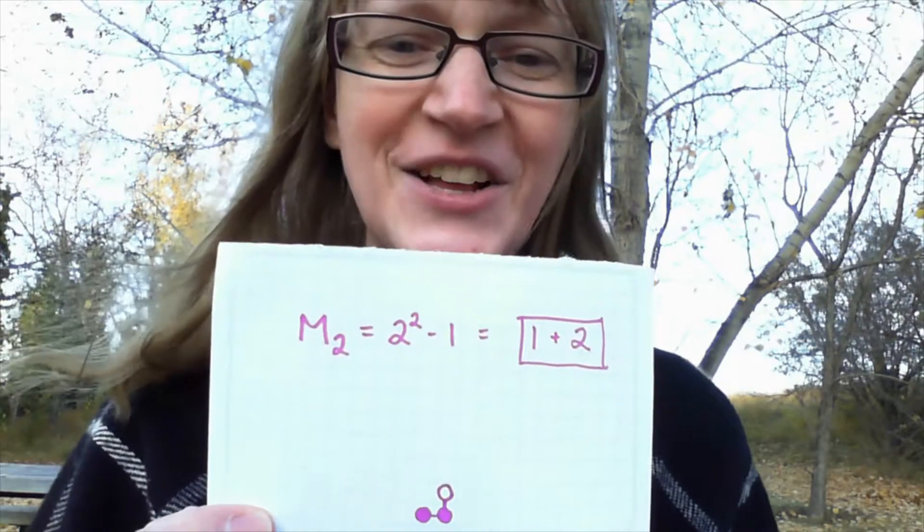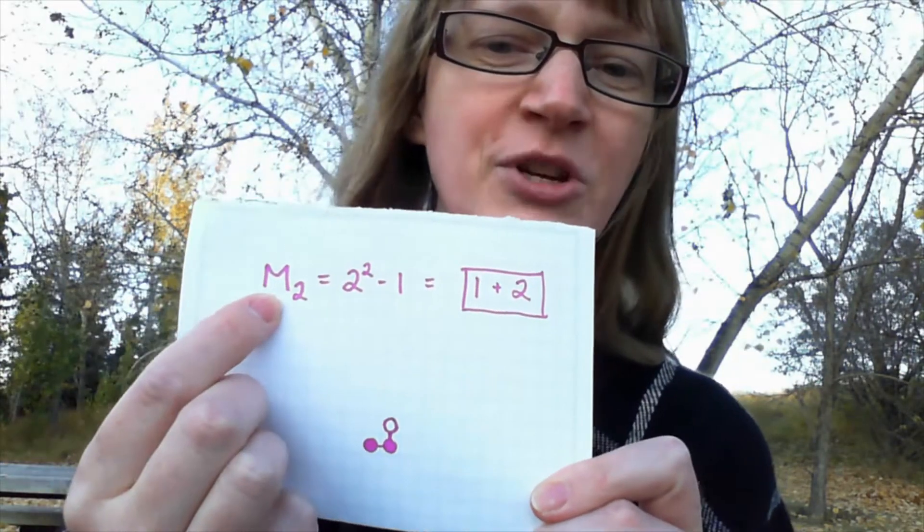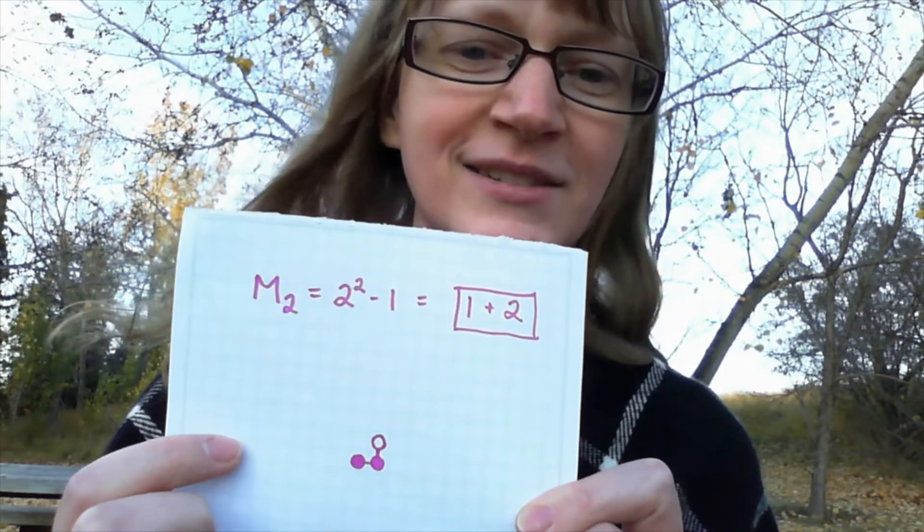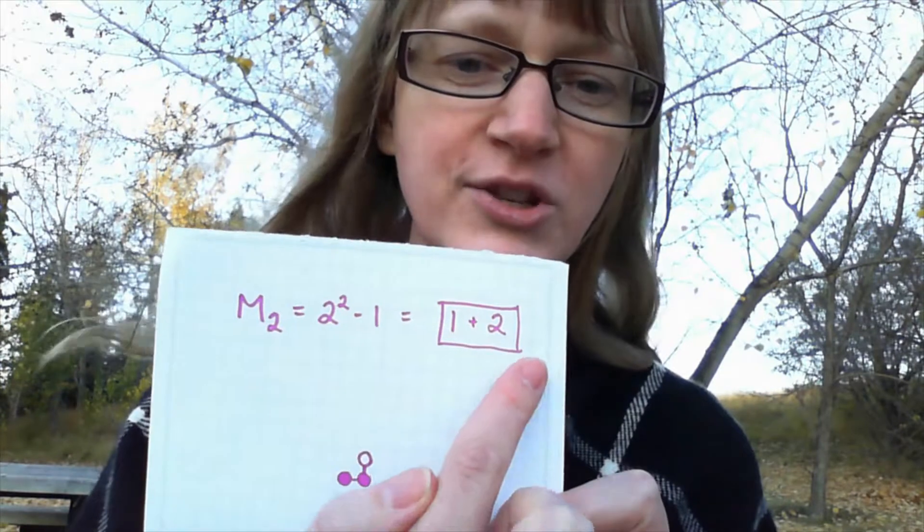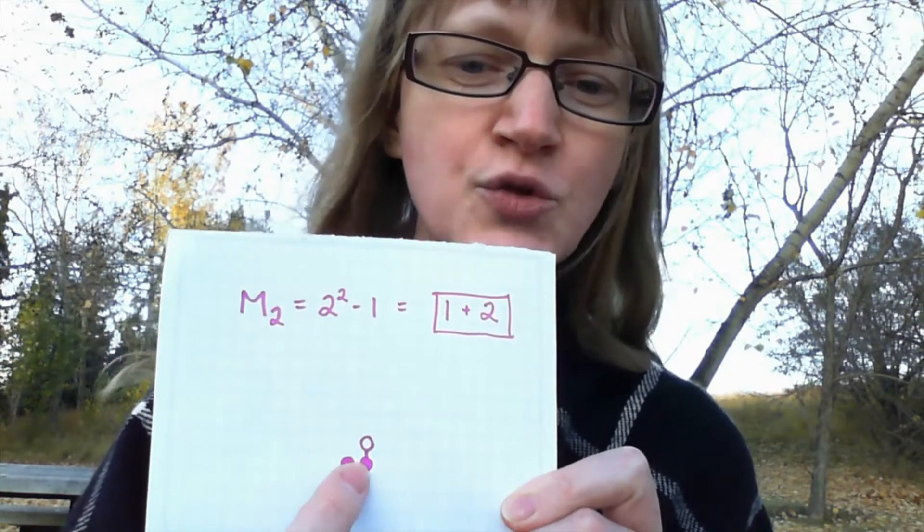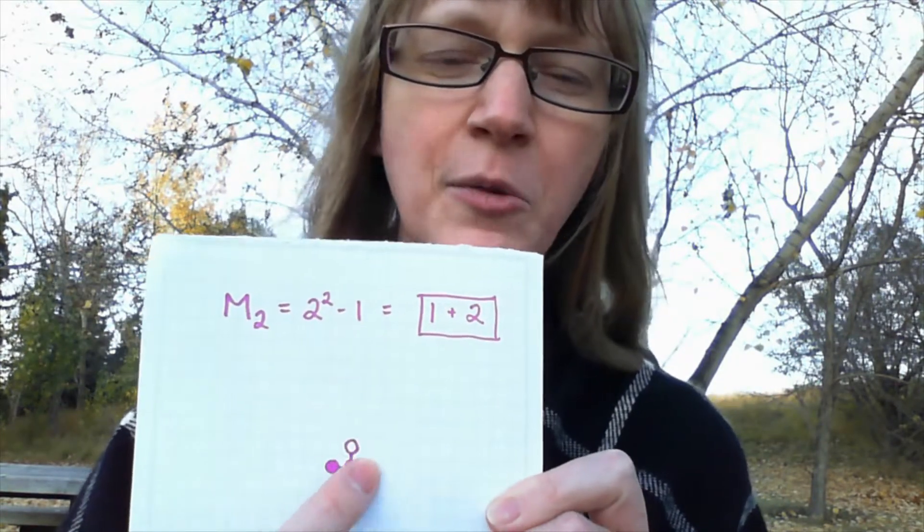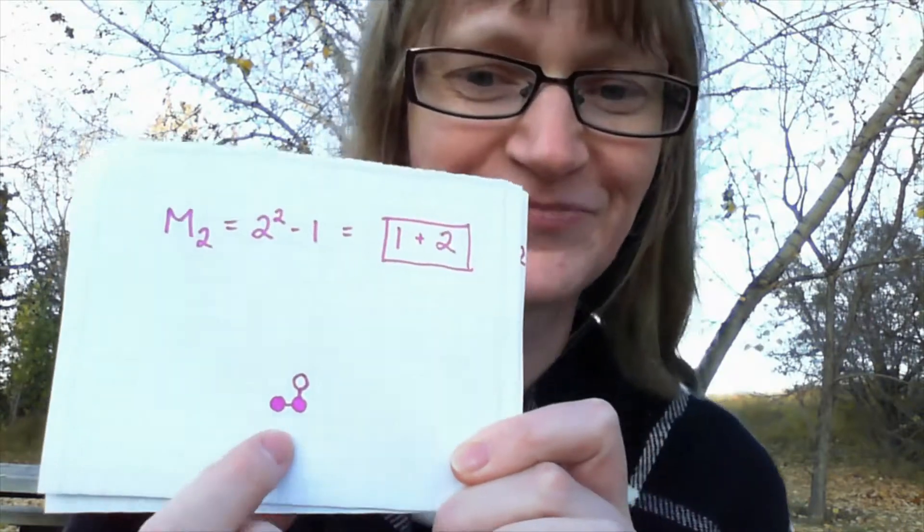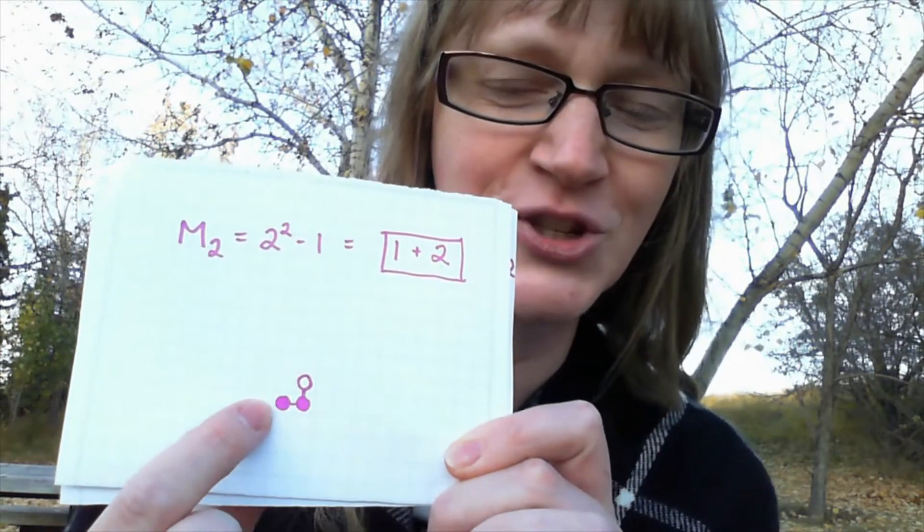So let's take a look at this one first. Here is the Mersenne number two squared minus one and it is one plus two. Let's try drawing these in a spiral pattern just to see what happens. This is literally my thinking process. Let's just try it. One plus two.